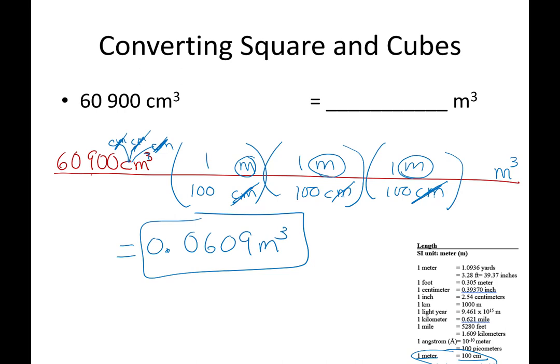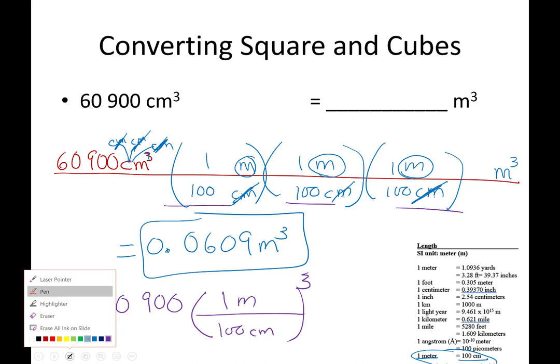Now, I am hearing some of you yelling at me from your home saying there's an easier way to do it. Yeah, there is. You can also do this. You can set it up like this because these three are the same fraction. You can draw it like this: one meter, 100 centimeters, and you can cube the entire fraction, which means you're basically saying one cubed, meters cubed, 100 cubed, centimeters cubed.